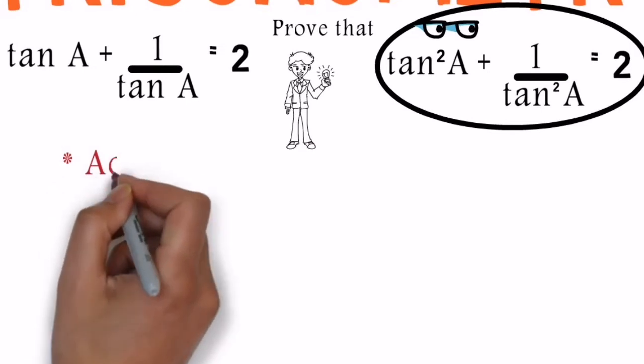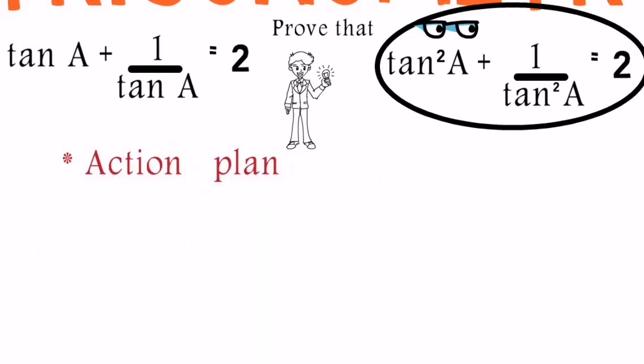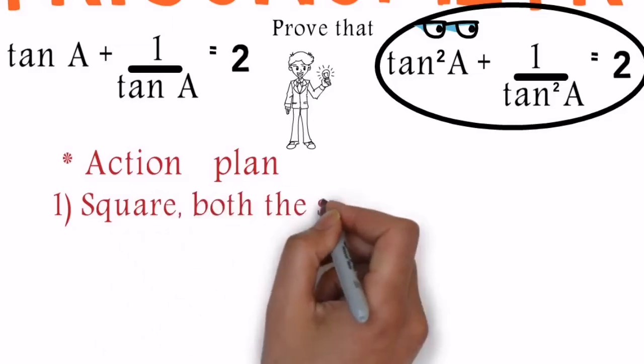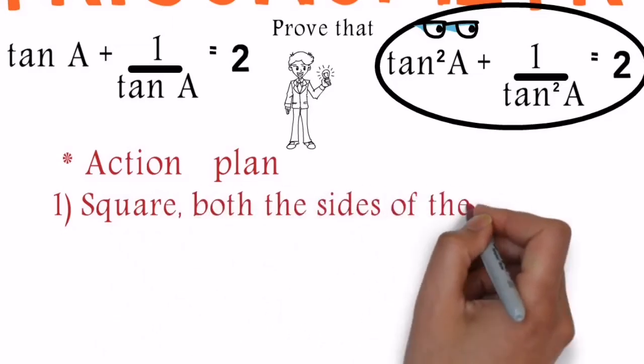Now here, our observation says that in the prove that section, we have square with the tan, and that square is missing with the tan in the given section. So our first step of the action plan will be to square both the sides which is given in the given part.